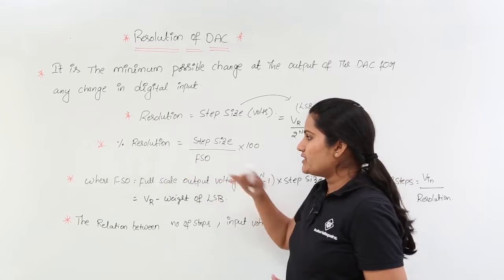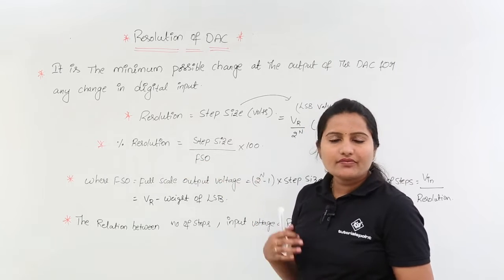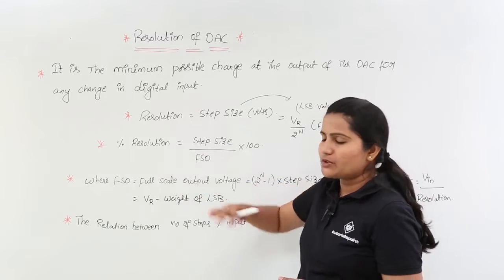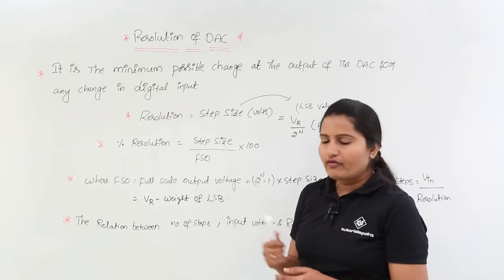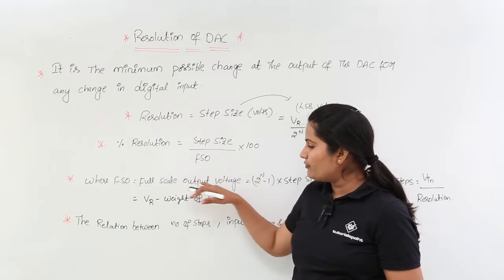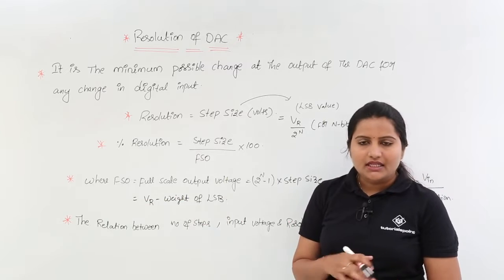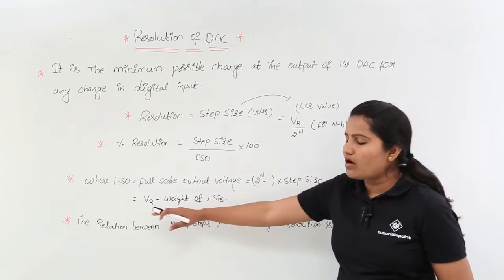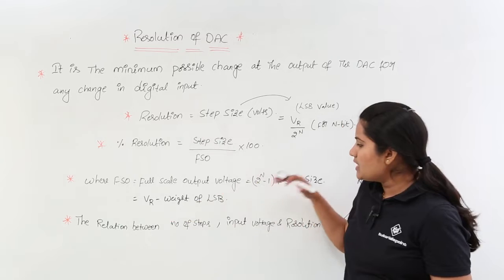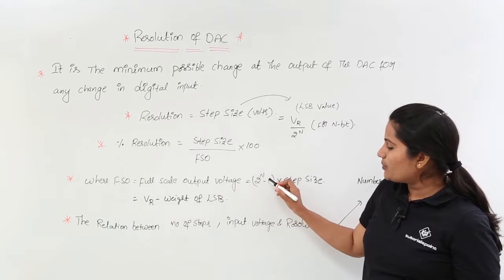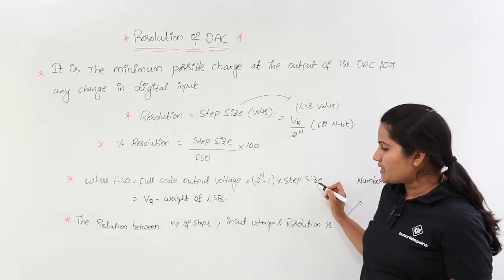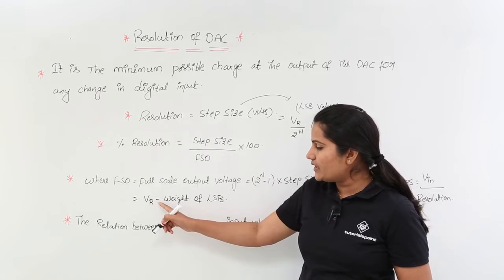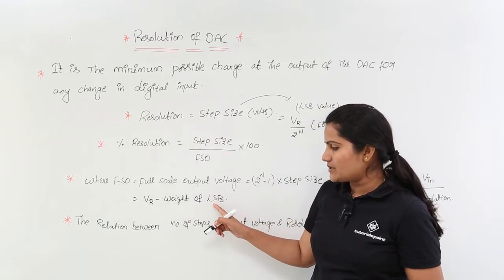Now, percentage of resolution. Percentage of resolution is equivalent to step size divided by FSO, into 100, where FSO is the full scale output voltage. This can be calculated using this formula. FSO is equivalent to 2 power n minus 1, multiplied by step size.